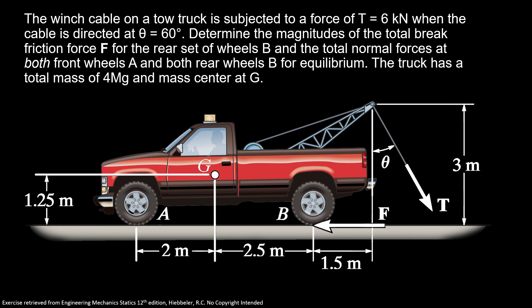Now, let's go for our problem. The winch cable of a tow truck is subjected to a force of T equals 6 kN when the cable is directed at theta equals 60 degrees. Determine the magnitudes of total brake friction force F for the rear set of wheels B, and the total normal forces at both front wheels A and both rear wheels B for equilibrium. The truck has a total mass of 4 megagrams and mass center at G.